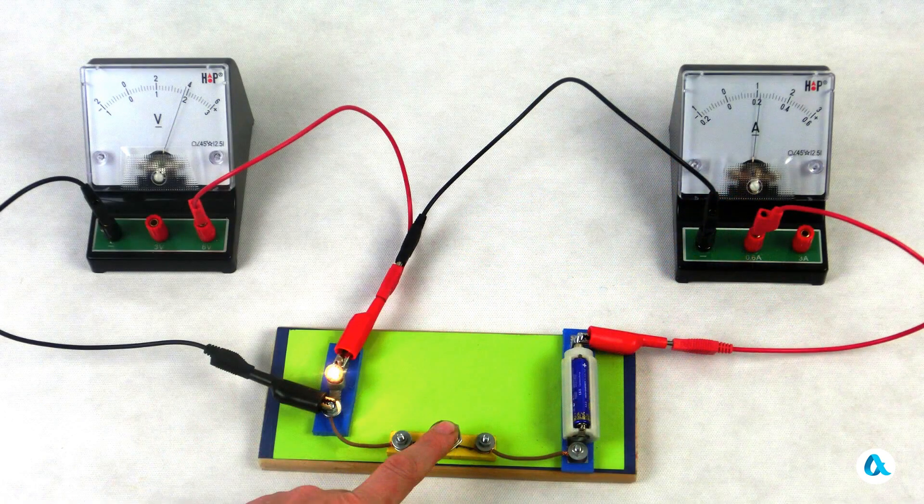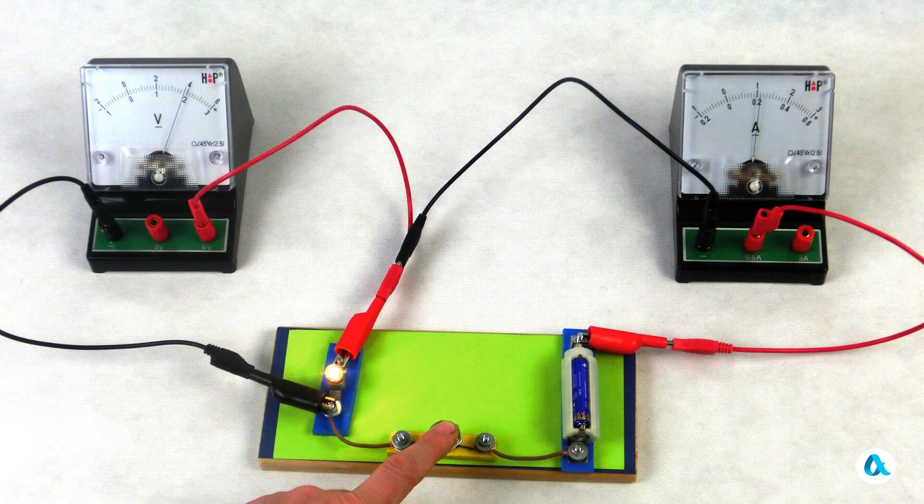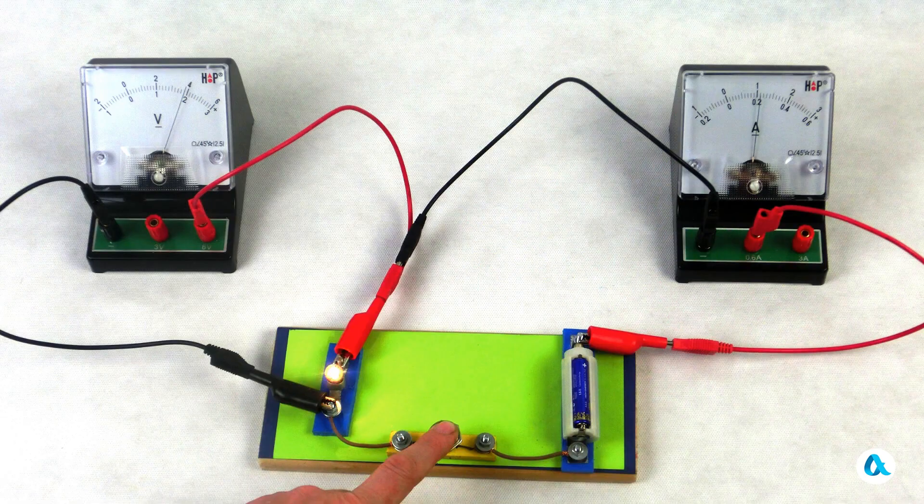And as it should be, the ammeter is connected in series with the light bulb and the voltmeter is connected in parallel to it.